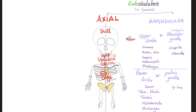Now the appendicular skeleton: in the upper extremities, you have the shoulder girdle or pectoral girdle — pectoral means this area right here. The shoulder girdle is made of scapula and clavicle, holding up the humerus, radius and ulna, then the carpal bones, metacarpal bones, and the phalanges.